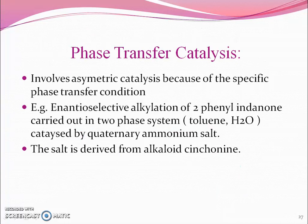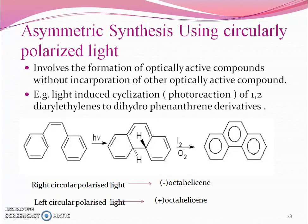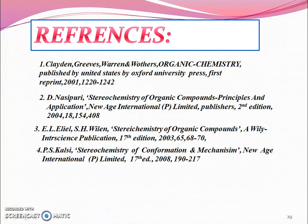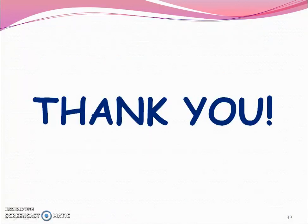Phase transfer catalyst is another category. Asymmetric synthesis can also be done via the use of circularly polarized light. When right circularly polarized light is used, minus octahelicene is formed. When left circularly polarized light is used, plus octahelicene is formed. Thank you.